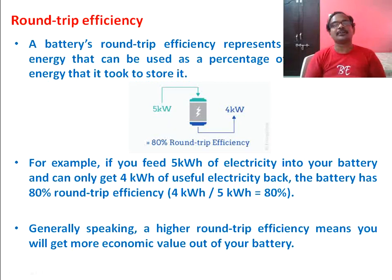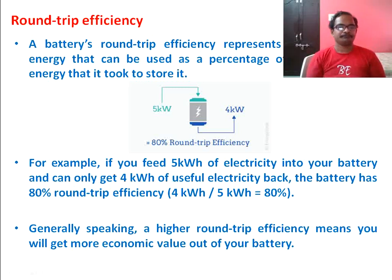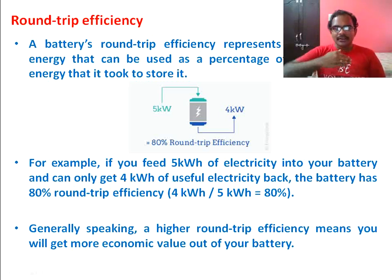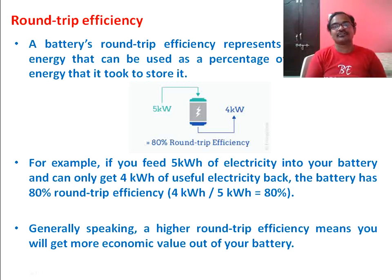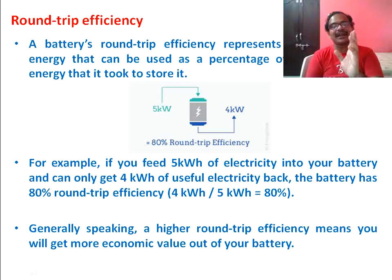The next point is round-trip efficiency — the efficiency of a battery through charging and discharging. For example, if you feed 5 kWh of electricity into the battery but can only discharge 4 kWh from it, then 1 kWh is lost in the charging and discharging process. The round-trip efficiency is 4 divided by 5, which is 80%. This round-trip efficiency should be as high as possible.